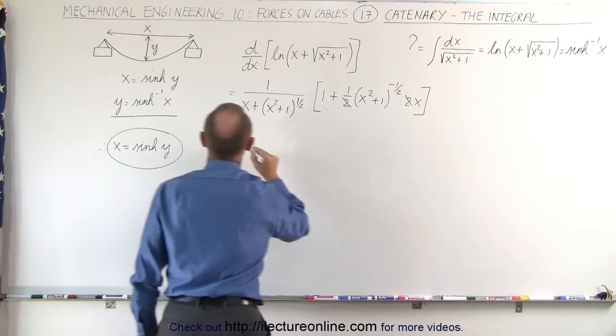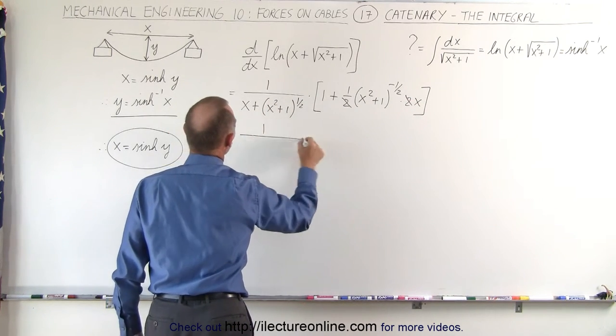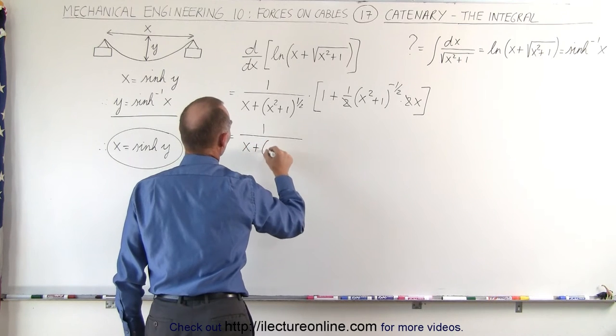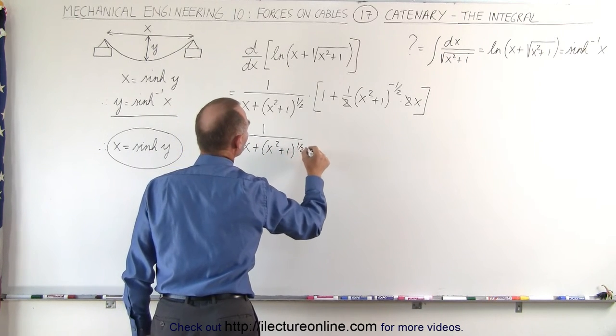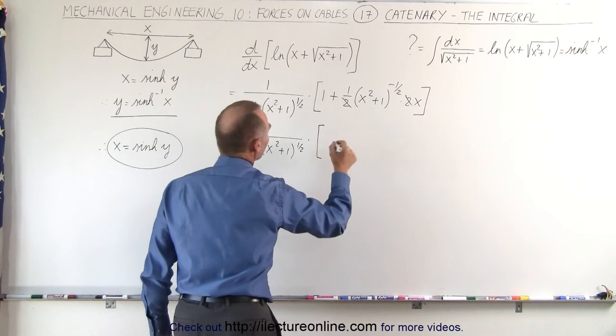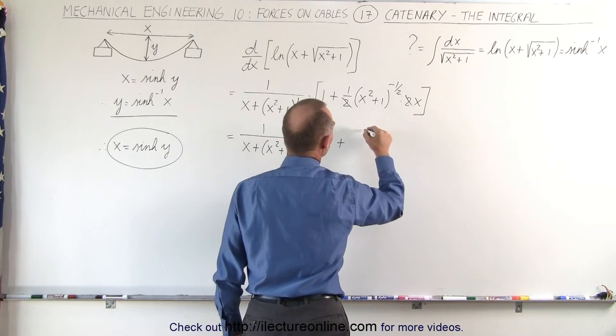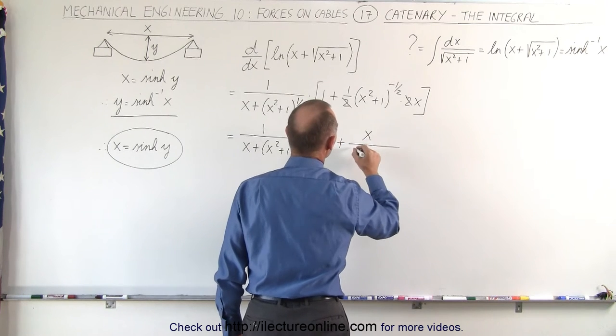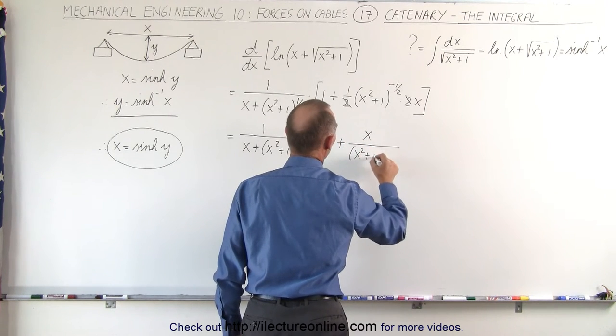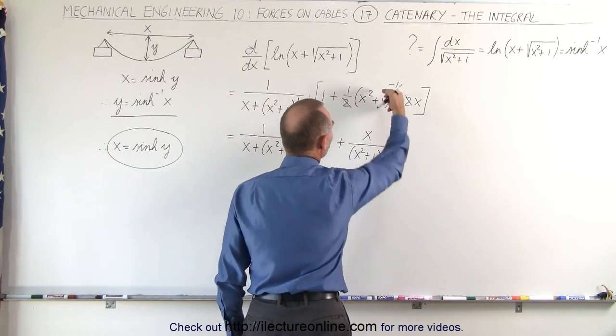And simplifying this, we end up with 1 over x plus the quantity x squared plus 1 to the 1/2 power, times, we're left with a 1 plus, in the numerator we have an x, and in the denominator we have an x squared plus 1 to the positive 1/2 power when we bring it down.